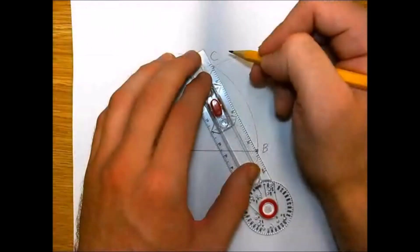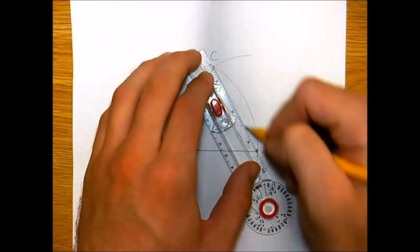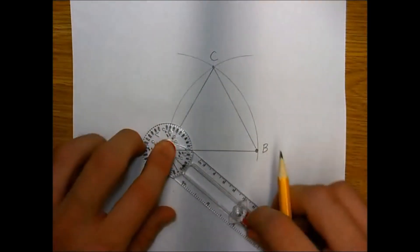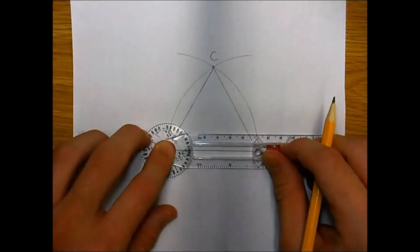When we connect AC and BC, we will have successfully constructed an equilateral triangle. All three sides are the same and the three angles will measure 60 degrees.